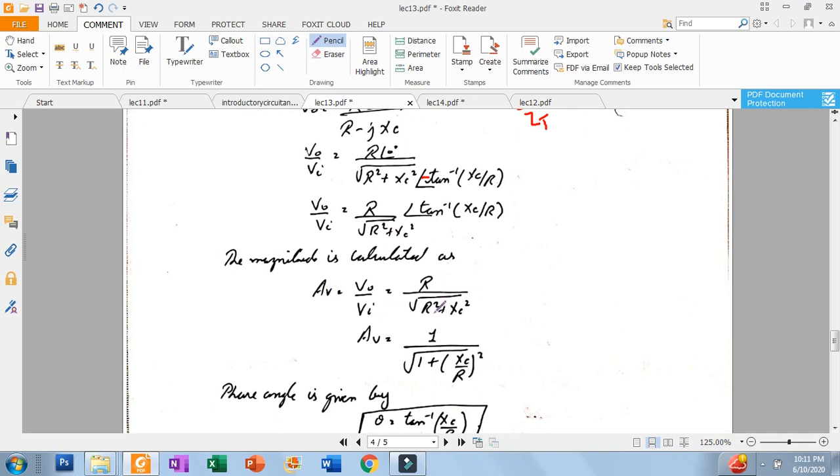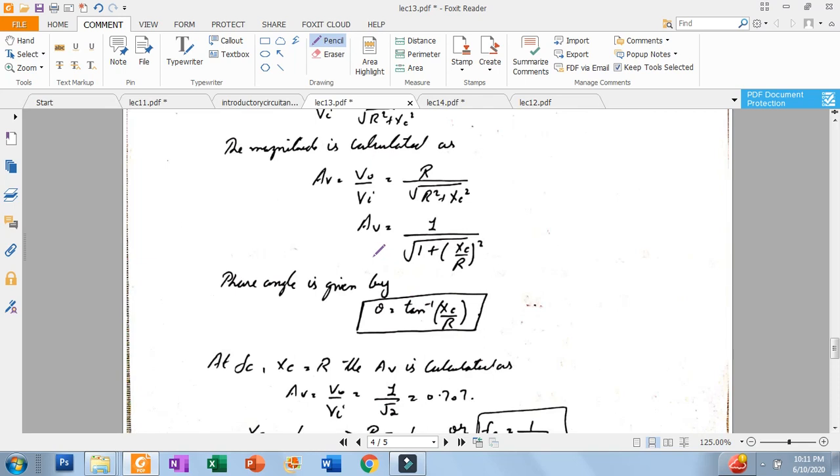Here you have a common R that cancels from R and R. This is your main formula for high pass filter.